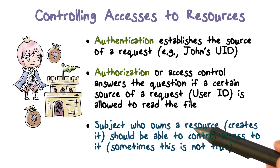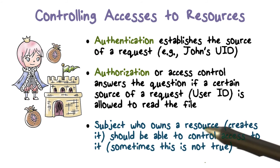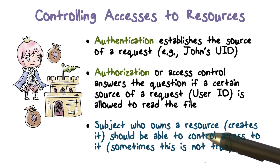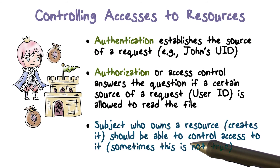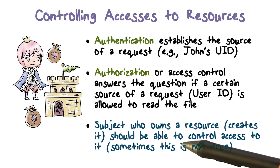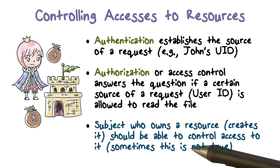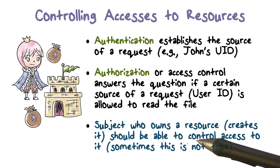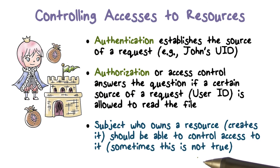How do we actually decide this? Resources in the system, for example files, are created by certain users or subjects. If Alice is creating a file, maybe she has the ability to decide who should be able to access it — the intuition being it's her file, and she chooses who to share it with. In many systems, the idea of an owner of a resource is defined: this is the subject who creates the resource, and it is at the discretion of the owner how that resource can be shared. However, there are other kinds of systems where this may not be the case — for example, if you work for a company, the company may not allow you to decide how you can share certain sensitive data.